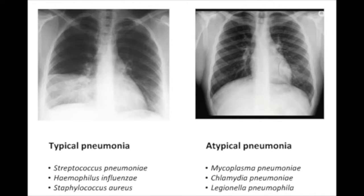For atypical pneumonia, the picture is slightly different. The person is usually younger and generally healthy — for example, a 24-year-old man with a persistent cough and low-grade fever who has still been able to go to work, though feeling lousy. The chest X-ray shows a patchy infiltrate — a hazy area around the cardiac silhouette in the left lung field. It's not very impressive compared to the lobar infiltrate of typical pneumonia, which really jumps out at you.